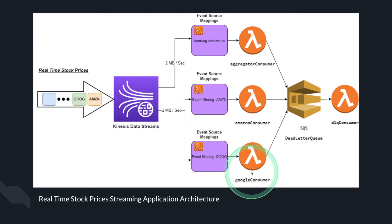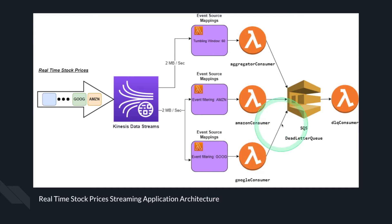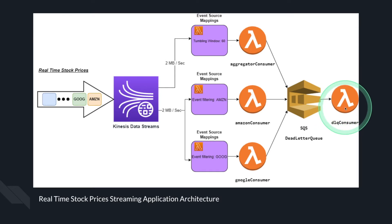The third is the Google consumer. This consumer has the same configuration as the Amazon consumer with only one change — it filters events only with the GOOG ticker symbol. Each one of the consumers is defined with an SQS on-failure destination config. This configuration sets up the on-failure location for events to be sent to once it has reached the maximum number of retries when the function returns an error. Then Lambda will send some metadata about the failed batch to this destination. In order to process failed records from the SQS dead-letter queue, I have defined a DLQ Consumer Lambda function. This function will receive metadata about the failed batch and print it to CloudWatch.